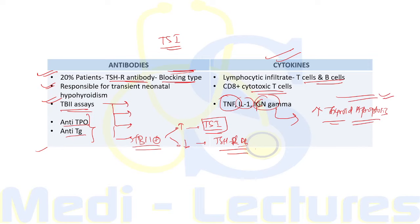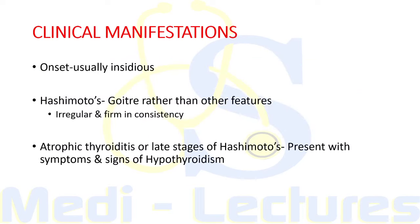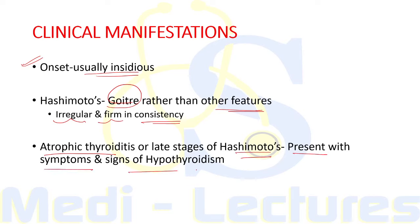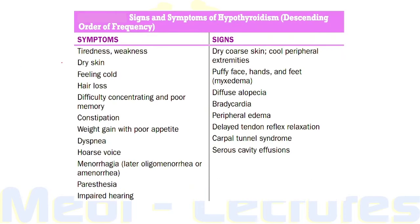The onset of autoimmune thyroiditis is usually insidious. Patients with Hashimoto's thyroiditis may present because of goiter rather than other features of hypothyroidism; the goiter is irregular and firm in consistency. Patients with atrophic thyroiditis or late stages of Hashimoto's usually present with signs and symptoms of hypothyroidism. The most common presenting symptom is tiredness and weakness, with dry, coarse skin and typically cool peripheral extremities.